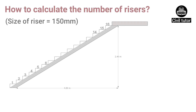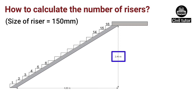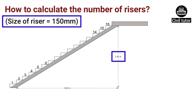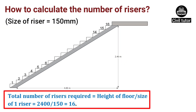Now let's discuss how to calculate the total number of risers required for a staircase. Suppose we have a given height equal to 2.4 meters, in which we need to calculate the total number of risers required for completing a flight. Taking the size of each riser equal to 150 mm, the total number of risers required will be equal to height of floor divided by size of one riser. Substituting these values, the total number of risers required will be equal to 16.